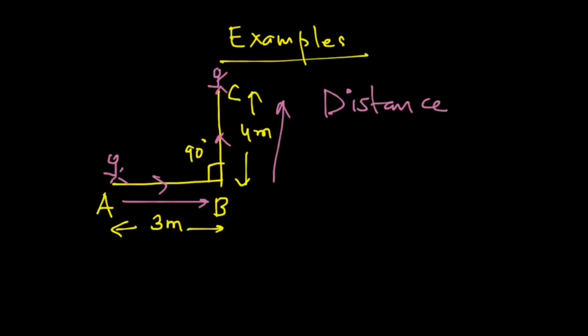Let's write those. What is distance? It is the length of the actual path traveled. So whoever is moving, he is moving from A to B first and then from B to C. So distance will be equal to AB plus BC, and that will be equal to 3 meters plus 4 meters, that gives you 7 meters.